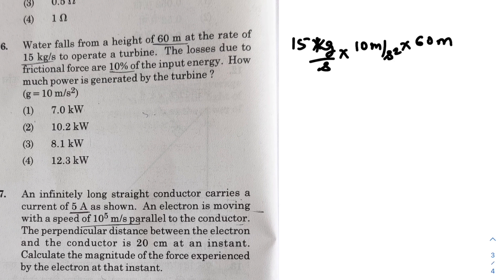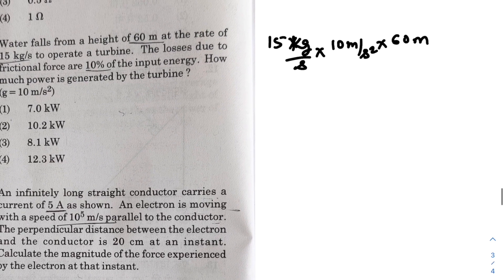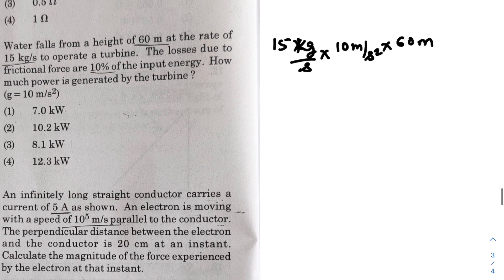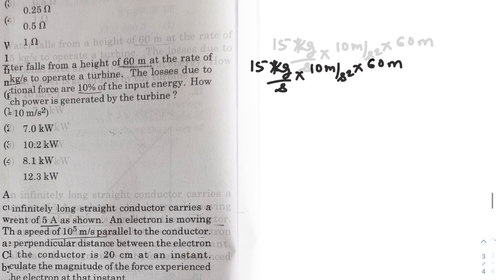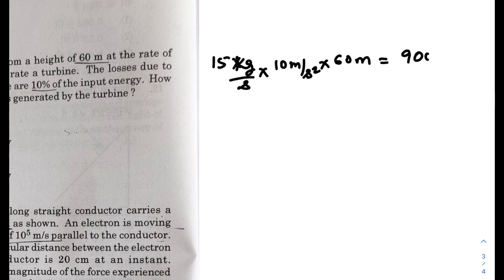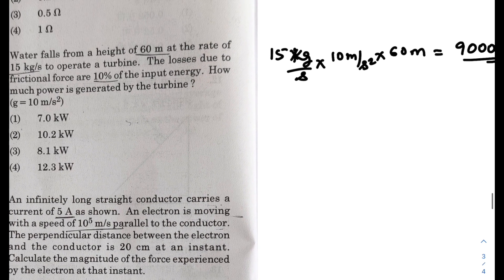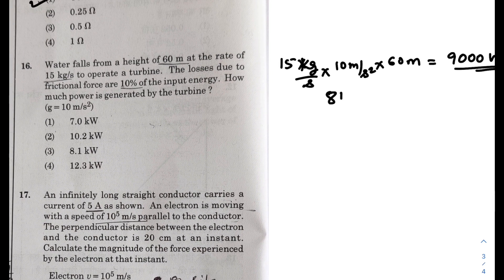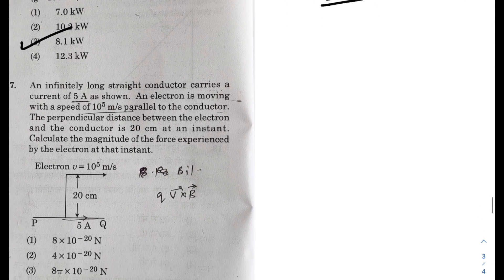So if I do this, we are getting kg meter square per second cube as the unit. So it is 150 into 60 what we will have. This is 9000 watt, that is the input power. The losses are 10 percent of the input energy. So what we will have is 8100 watt. So the power generated is 8.1 kilowatt.